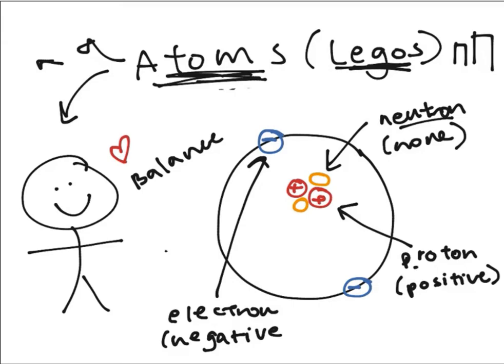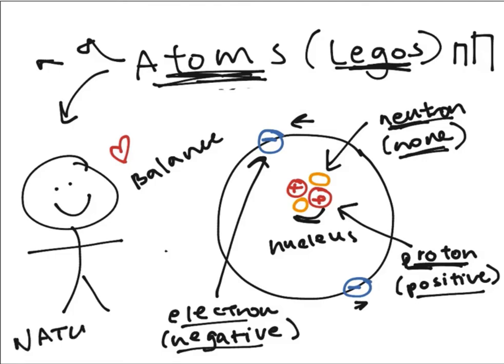There's the neutron which has no charge. The neutron has no charge, which is why it's called neutron, like neutral. Then there's the proton, which is positive. And then we have the electron, which is negative. They basically move around the nucleus, which is made out of the protons and the neutrons. So the electrons are flowing around the nucleus made of protons and neutrons.